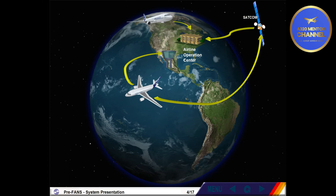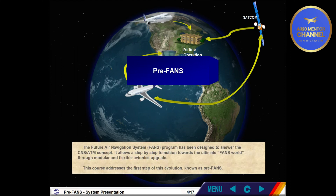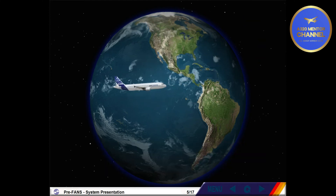The Future Air Navigation Systems program has been designed to answer the CNS ATM concept. It allows a step-by-step transition towards the ultimate FANS world through modular and flexible avionics upgrade. This course addresses the first step of this evolution known as pre-FANS. The pre-FANS includes two main functions: the Airline Operation Center, AOC, and the air-ground communication.